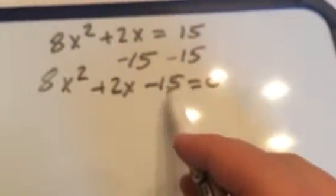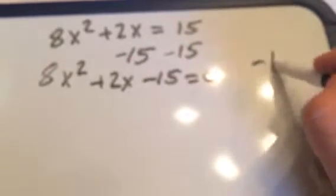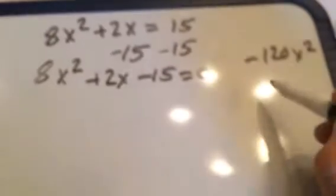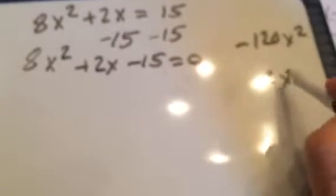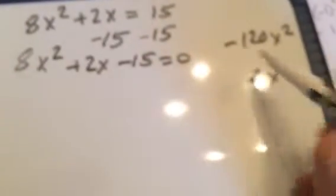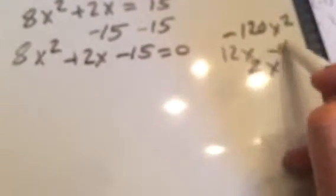We can factor 8 times negative 15 is going to be negative 120x squared. Leave the b as it is, 2x. Two things to multiply the top and to the bottom, 12x minus 10x.